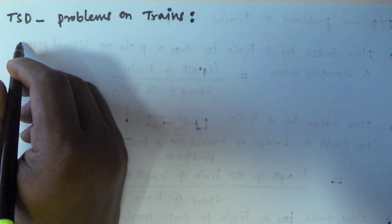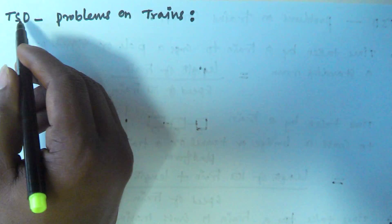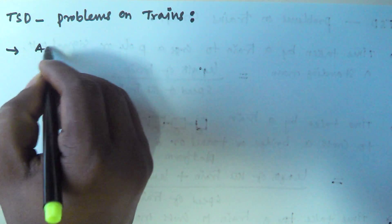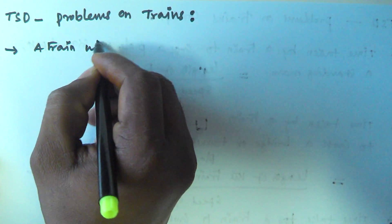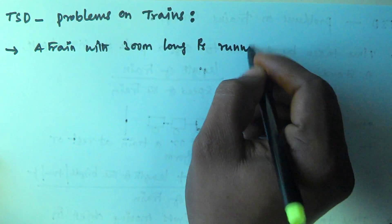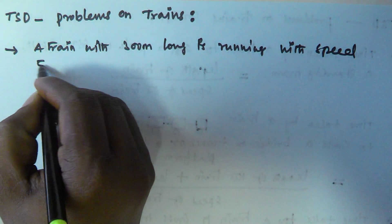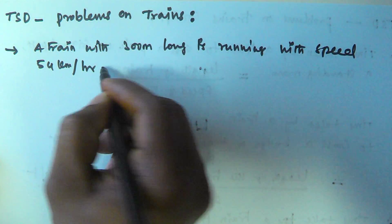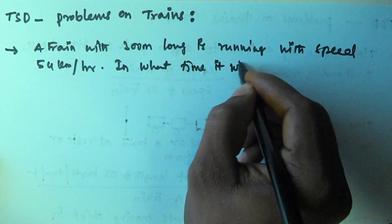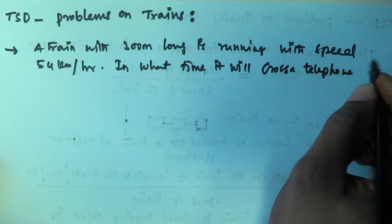Hello friends. In this video we will see the basic problems of trains related to the time-speed-distance concept. The first problem is: a train 300 meters long is running at a speed of 54 km per hour. In what time will it cross a telephone pole?